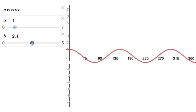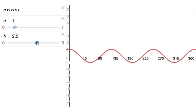Let's increase b up to the value of 3. And here we've now got 1, 2, 3 cycles of the cosine graph in the space of 0 up to 360 degrees.